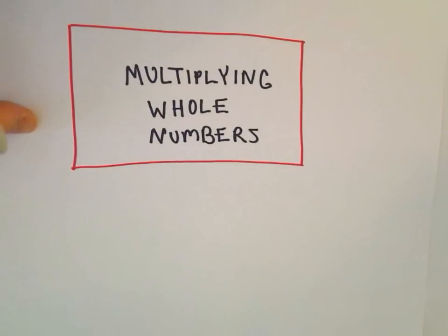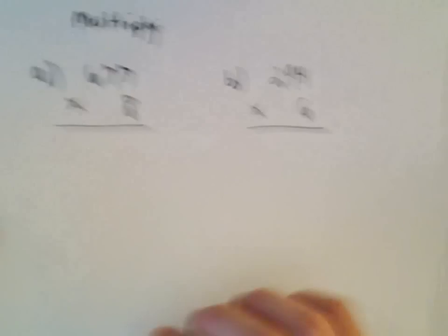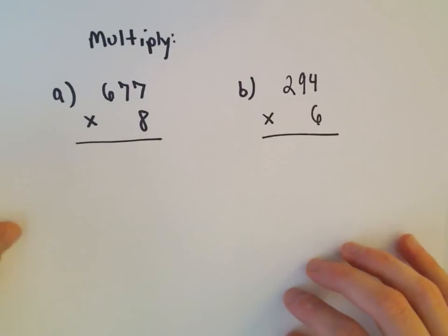Alright, so here we're going to look at two more examples of multiplying. In these examples, we'll have to carry some digits to the next column.